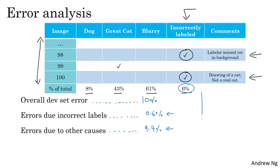Now, let's take another example. Suppose you've made a lot more progress on your learning problem. So instead of 10% error, let's say you brought the errors down to 2%, but still 0.6% of your overall errors are due to incorrect labels.